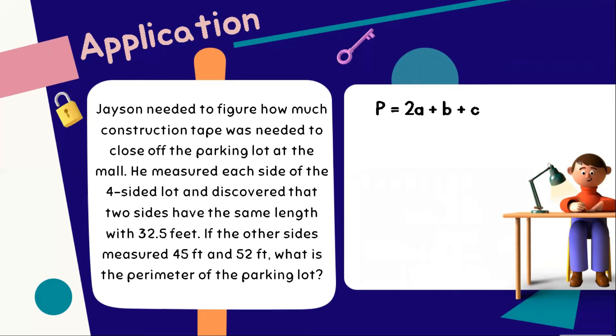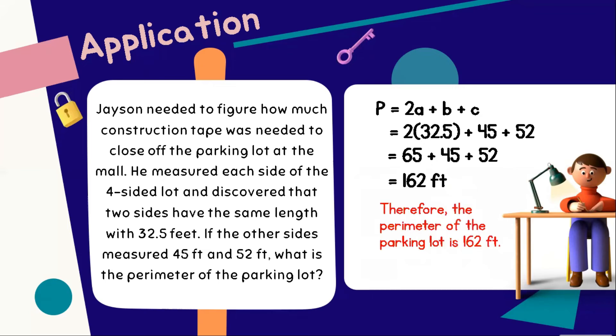Perimeter is equal to 2 times A plus B plus C. Let's substitute: 2 times 32.5 plus 45 plus 52. Next, we have 65 plus 45 plus 52. And in total, we have 162 feet. For our final answer, the perimeter of the parking lot is 162 feet.